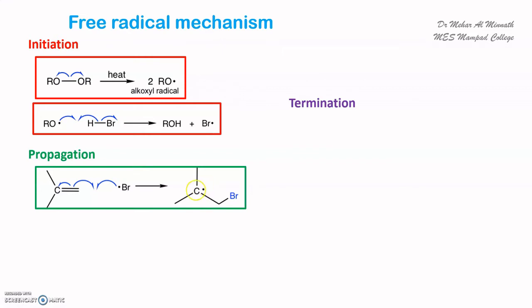When bromine attacks the less substituted carbon, a more stable tertiary free radical is generated. But if bromine had attached to the more substituted carbon, the free radical formed there would be the least stable. In electrophilic addition it is the other way around.